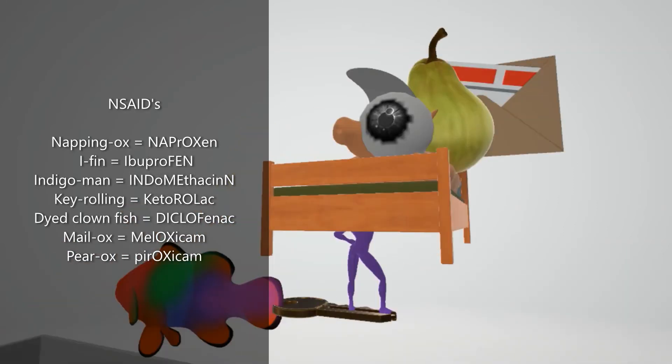More specifically, ibuprofen and naproxen are propionic acid derivatives, indomethacin, ketorolac, and diclofenac are all acetic acid derivatives, and meloxicam and piroxicam are enolic acid derivatives.